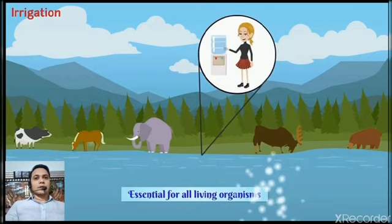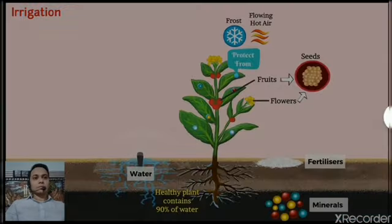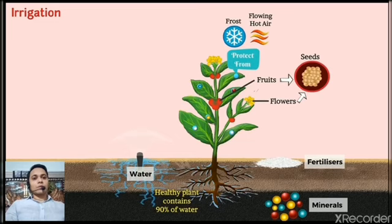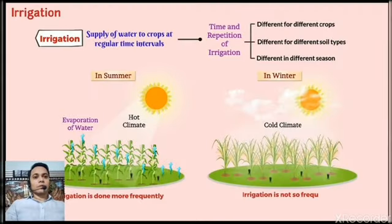Our next topic is irrigation. All living beings need water to live. Water is important for proper growth and development. Water is absorbed by the plant's roots, along with minerals and fertilizer. Plants contain nearly 90% water. Water is essential because germination of seeds does not take place under dry conditions, and nutrients dissolved in water are transported to each part of the plants. Water also protects the crop from both frost and hot air currents. To maintain the moisture of the soil for healthy crop growth, fields have to be watered regularly. The supply of water to crops at regular intervals is called irrigation. The time and frequency of irrigation varies from crop to crop, soil to soil, and season to season.